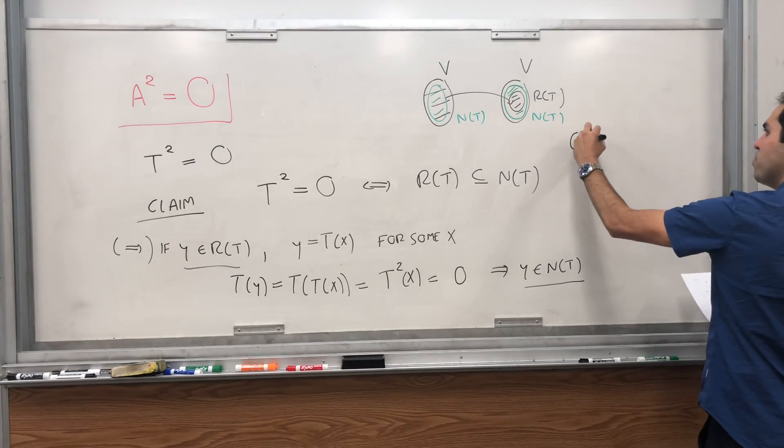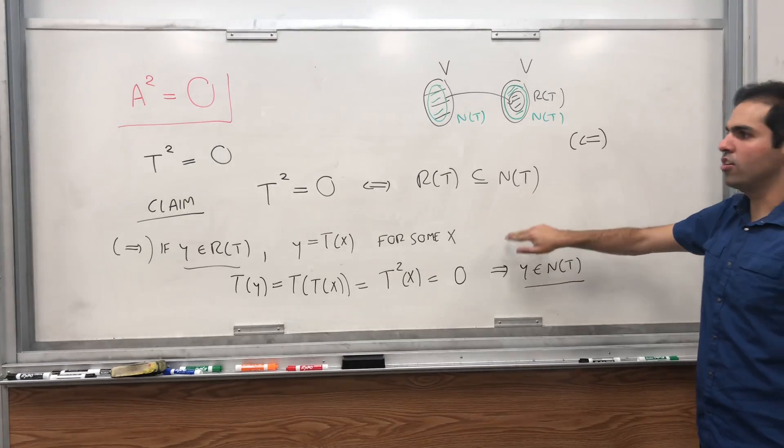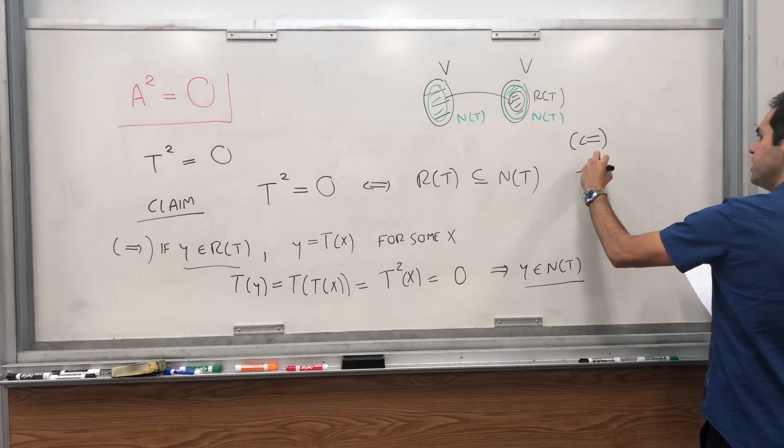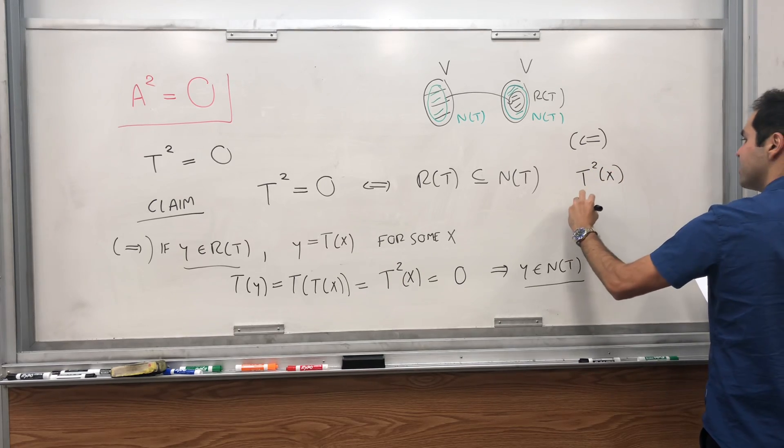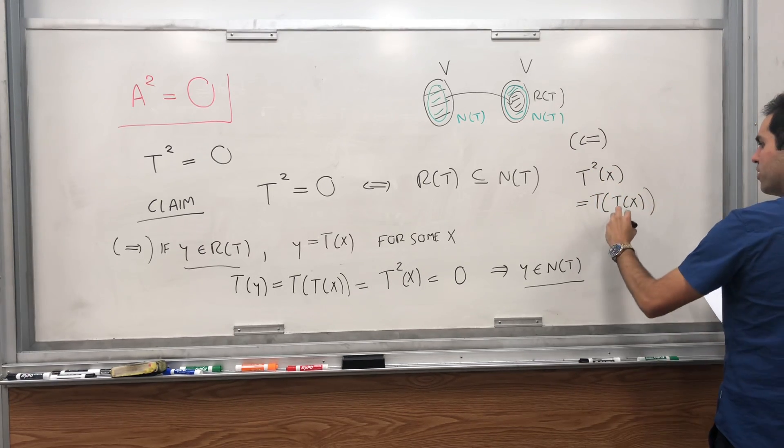Now, conversely, suppose the range is included in the null space. Let's show that T squared equals zero. Well, T squared of X, that's T of T of X. Now, here's the thing.